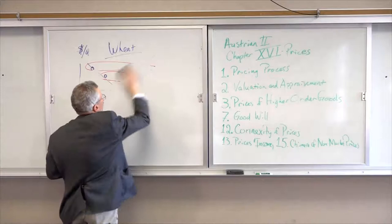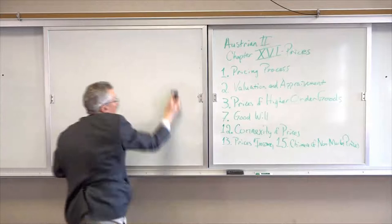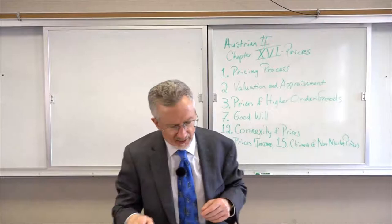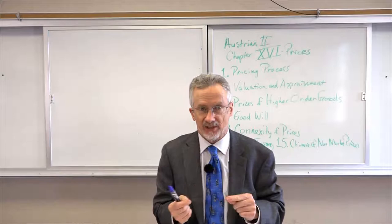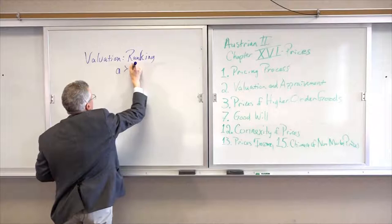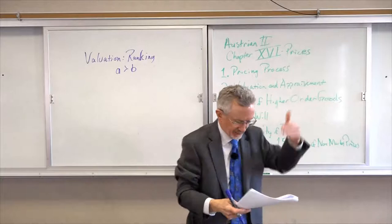Let's move to section two: valuation and appraisement. If we want to understand this pricing process we need to understand this, and then apply it to prices of higher order goods. Remember what valuation is — valuation is ranking of things in order. It's ordinal. So A is preferred to B, for example. No numerical value to that; it's just that this is better than that.